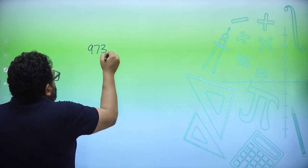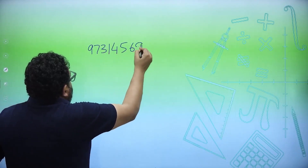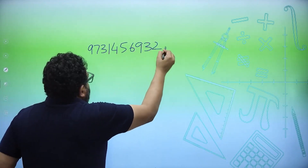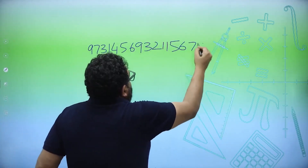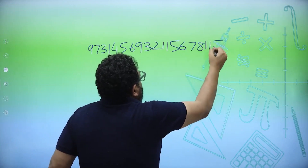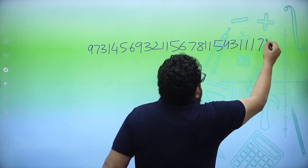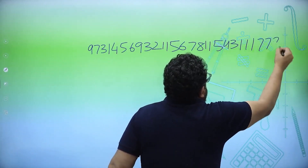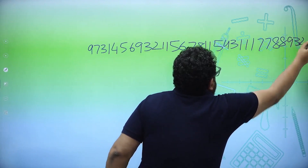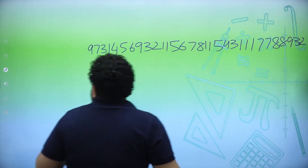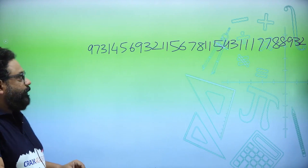I write a random number: 9, 7, 3, 1, 4, 5, 6, 9, 3, 2, 1, 1, 5, 6, 7, 8, 1, 1, 5, 4, 3, 1, 1, 1, 7, 8, 7, 7, 8, 8, 9, 3, 2. Is this number a multiple of 3?